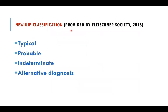There is a new UIP classification provided by the Fleischner Society in 2018, and the same topic was published by the American Thoracic Society and European Respiratory Society. All these societies divided UIP into four categories: typical, probable, indeterminate, and alternative diagnosis.